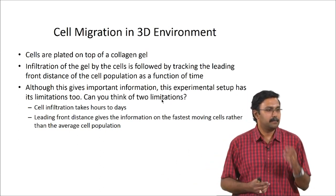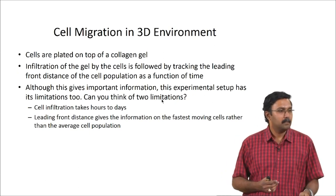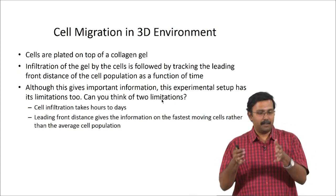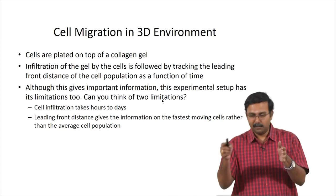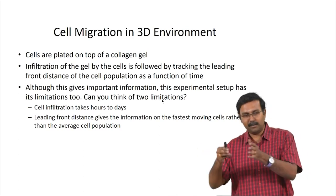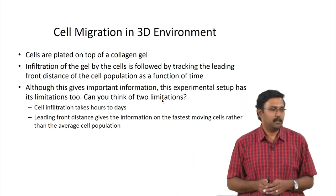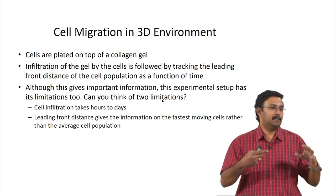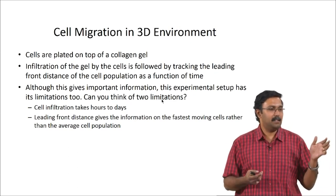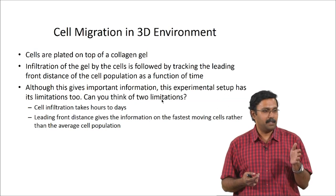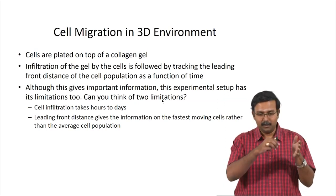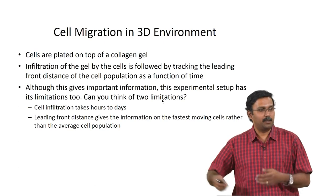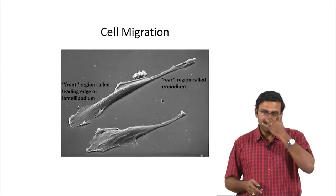The fastest cell is the leading edge you would be able to observe in the microscope — you just look at the farthest cell from the starting point. If you have a fluorescence-tagged preparation and are observing it in a microscope, you just identify the farthest cell from the starting point — that is all you are looking for.